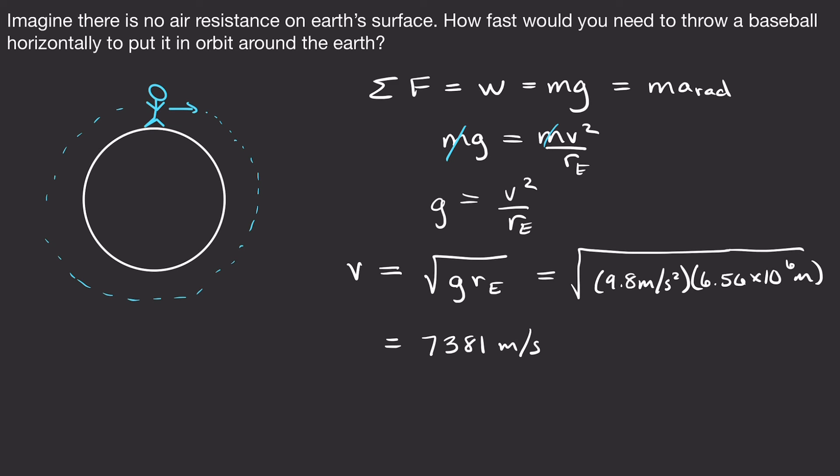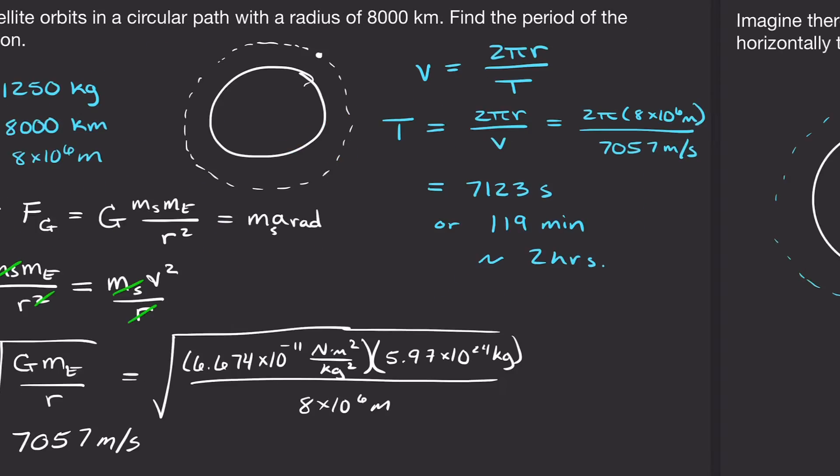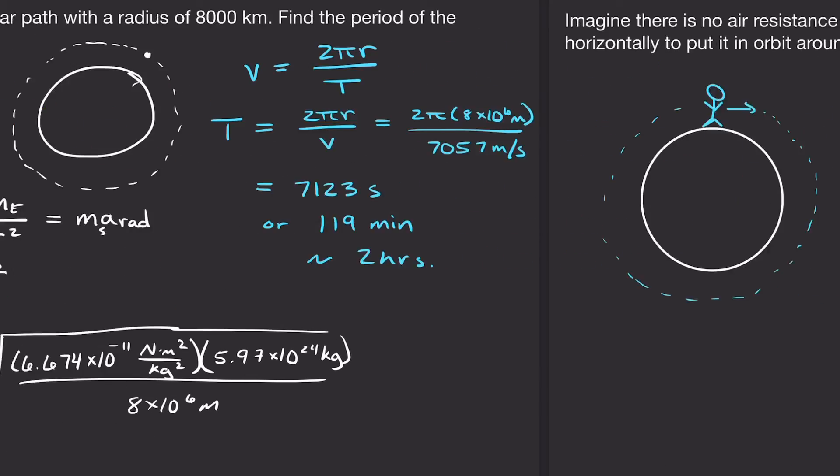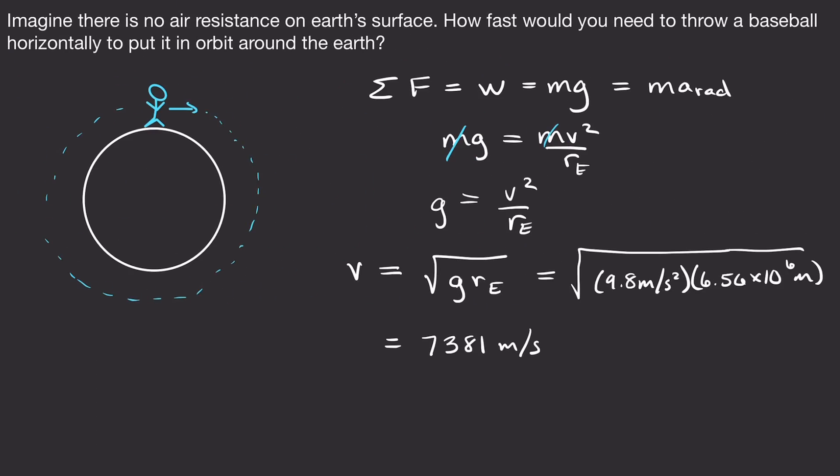That's pretty fast — and roughly consistent with the satellite speed found earlier, which was slightly lower because it orbited at a higher altitude. Notably, the velocity needed to put something in orbit is independent of the object's mass. It doesn't matter how big something is: get it going fast enough, and it can orbit without falling toward Earth.